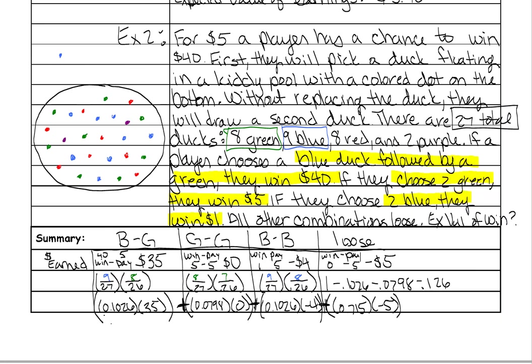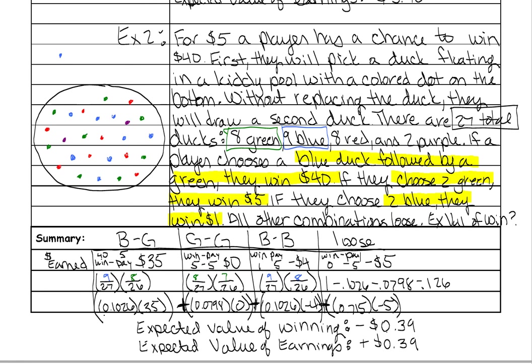That means you would be expected to lose an average of 39 cents per play. If you were running the game, you would earn that amount — we just change the minus to a positive. This question specifically asks how much you would win, so negative $0.39 is our correct answer.